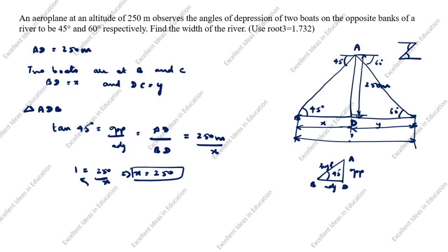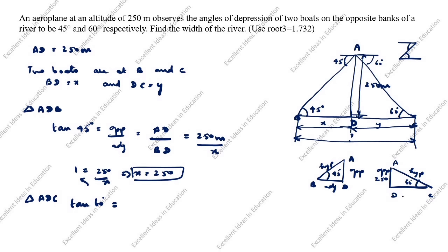Next we take triangle ADC. Tan 60 degrees equals opposite over adjacent. The opposite side is AD and the adjacent side is DC. So tan 60 = AD / DC = 250 / y. DC is y.